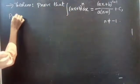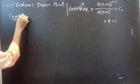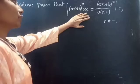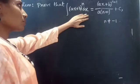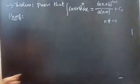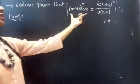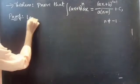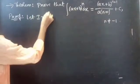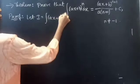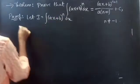Proof. We have to prove that integral of (Ax + b)^n dx equals the right-hand side. Let's consider the left-hand side as I. So let I equal the integral of (Ax + b)^n dx.